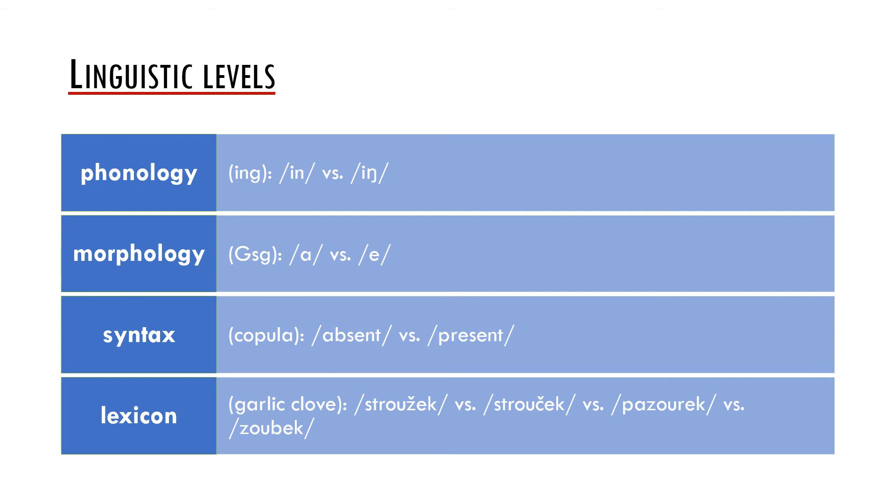We may also examine syntactic variation. In Afro-American vernacular English, an interesting variable is copula omission. Speakers of this variety of English may use copula as in standard English, but they typically omit it in certain contexts.